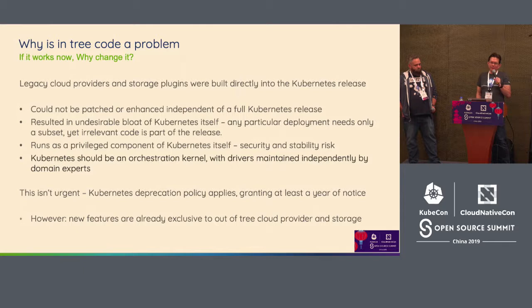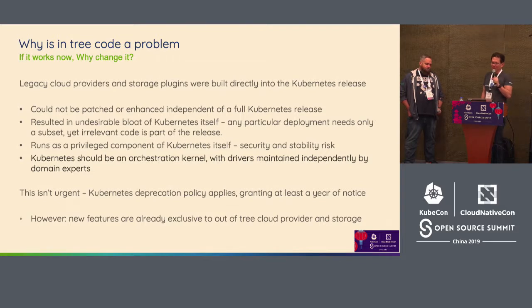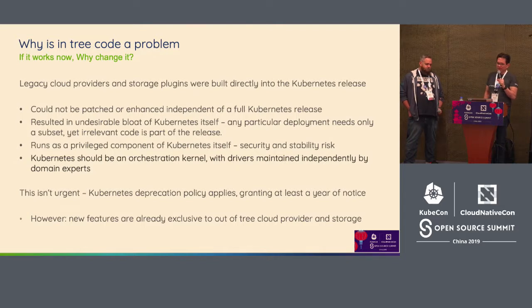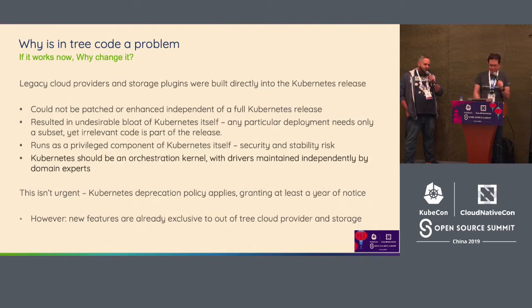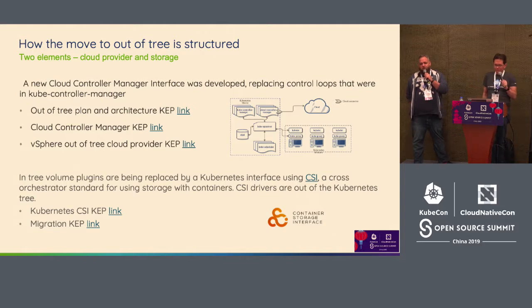This move of cloud providers out of tree isn't really urgent — the standard Kubernetes deprecation policy applies, meaning users get a minimum of one year's notice and aren't forced to migrate overnight. Both the in-tree and out-of-tree versions will be available simultaneously. Right now we're looking at 1.20 as the release where everything will be pulled from in-tree, which will happen approximately around late 2020.